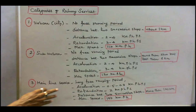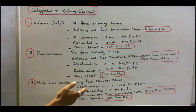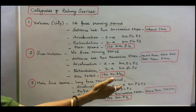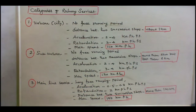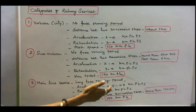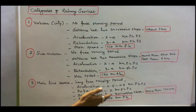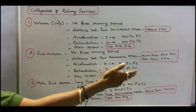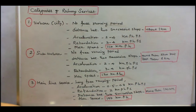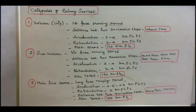The third is mainline service. It has a long free running period. Acceleration is 0.5 to 0.8 km/h/s and retardation is 2 km/h/s. Distance between two successive stops is more than 120 km, and maximum speed is 150 km/h.